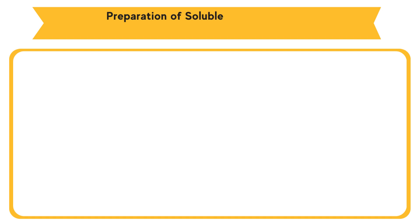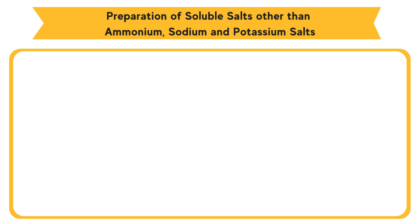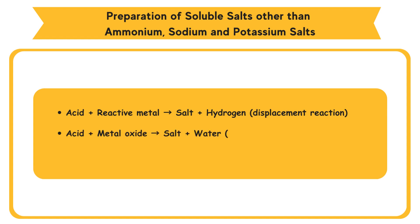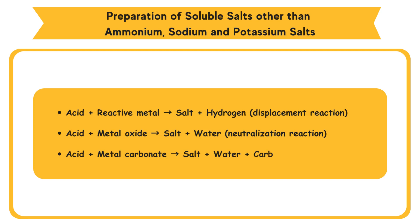Preparation of soluble salts other than ammonium, sodium, and potassium salts — prepared by reacting dilute acids with reactive metals, metal oxide, or carbonates. Acid plus reactive metal becomes salt plus hydrogen — displacement reaction. Acid plus metal oxide becomes salt plus water — neutralization reaction. Acid plus metal carbonate becomes salt plus water plus carbon dioxide.